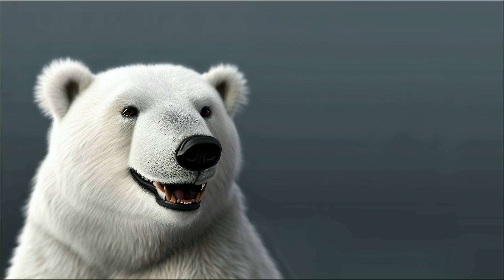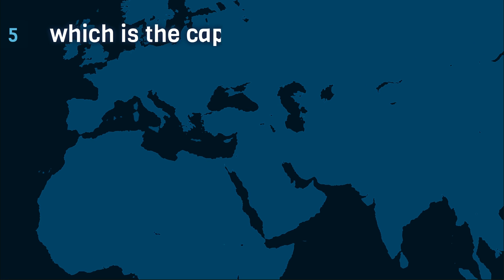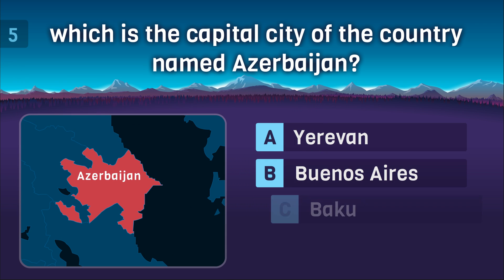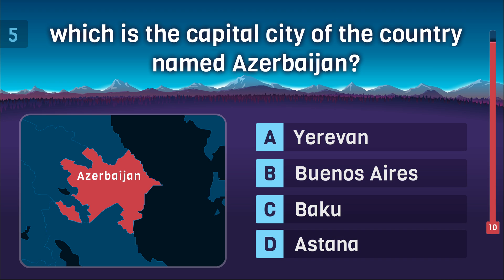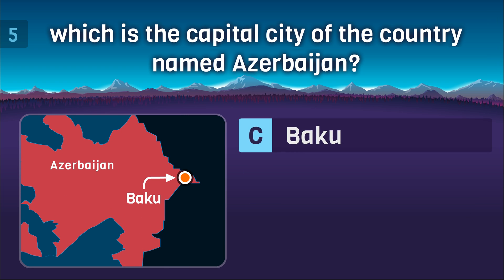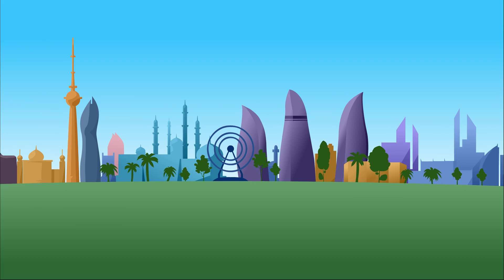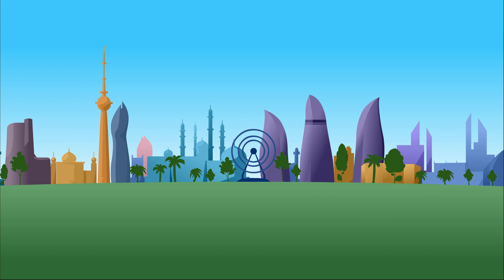Next question. Which is the capital city of the country named Azerbaijan? Baku is the capital city of Azerbaijan. The interesting thing about this city is it is 28 meters below sea level, which makes the city the lowest lying capital of the world. And it is also known as the city of winds because the city faces windy weather throughout the year. The traditional meaning of the word Baku is pounding winds.